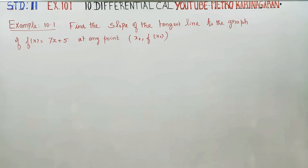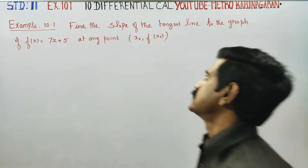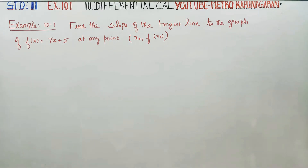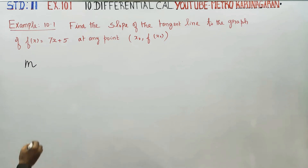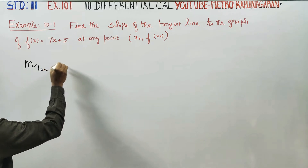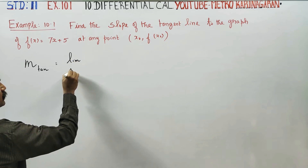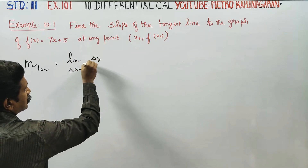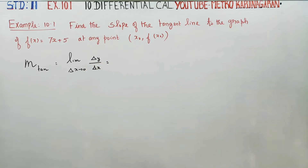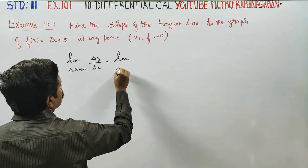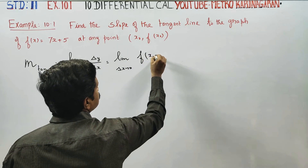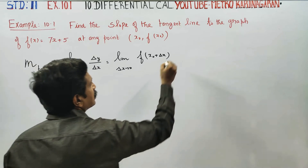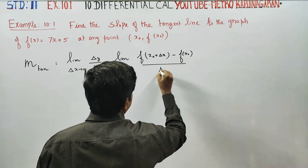Dear Lewenstein F students, I am Mettro Karnagaran. In differential calculus, you have to find the slope of the tangent line to the graph. The slope of the tangent is equal to — the formula goes like this — limit as delta x turns to zero of delta y by delta x, or limit as delta x turns to zero of f of x0 plus delta x minus f of x0, all divided by delta x.